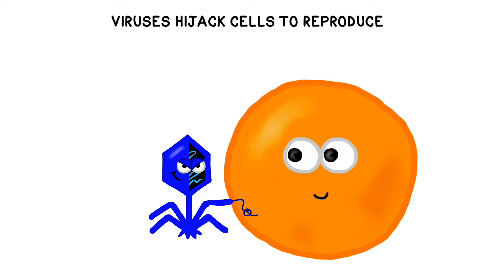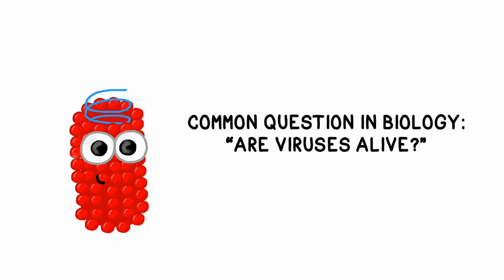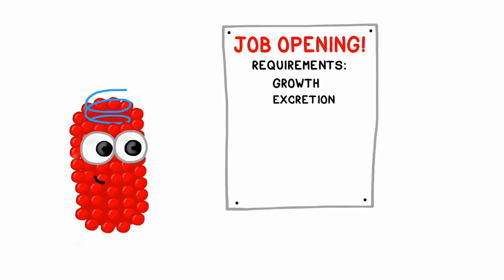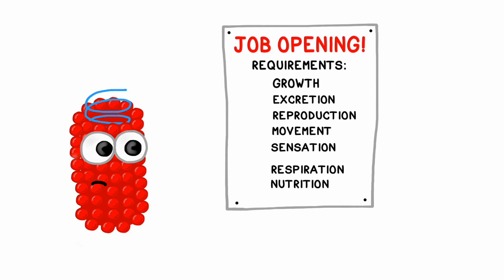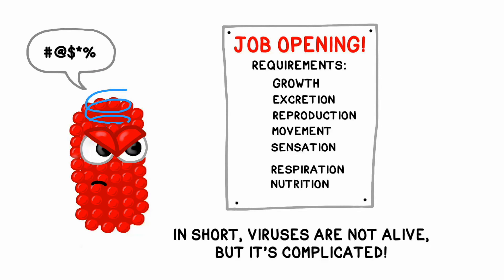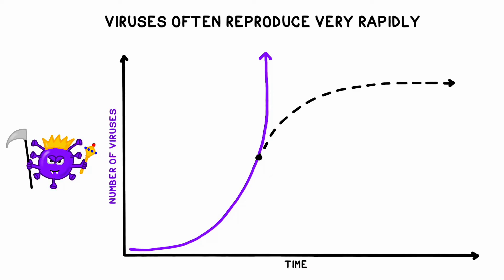Viruses lack the equipment necessary to manufacture proteins or to reproduce on their own. Instead, they hijack a cell and use its organelles, enzymes, and other equipment in order to do so. A common debate in biology is whether or not viruses are alive. Viruses definitely have many characteristics that make them similar to living beings — we often say that living things exhibit growth, excretion, reproduction, movement, sensation, respiration, and nutrition. Viruses don't have all of these characteristics, so in short, viruses are not alive, but it's complicated. Viruses reproduce extremely rapidly, so their populations can grow in a very short amount of time — hence the term 'going viral.' Initially, their growth tends to be exponential. However, they ultimately run out of new hosts to infect and their growth levels off.